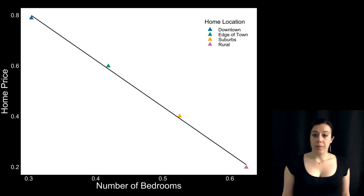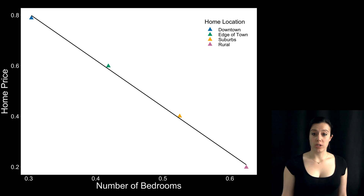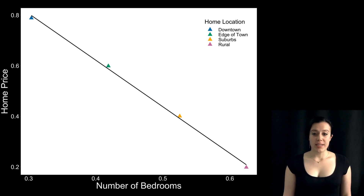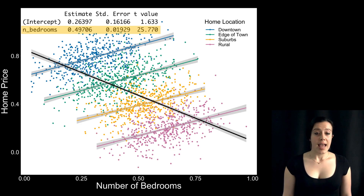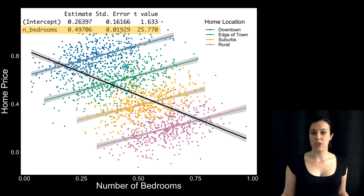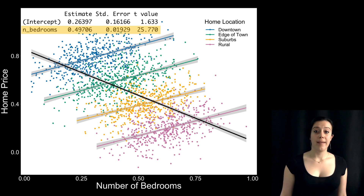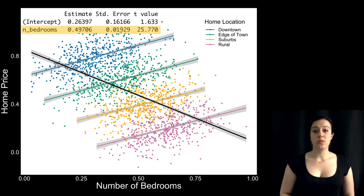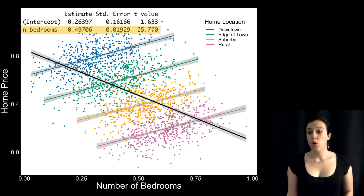So we see different effects when we look between versus within home type. This is where the beauty of multilevel modeling comes in. We can give multilevel models all of the data without aggregating by home type, but we can tell it about home type. When we build this multilevel model, the relationship between the number of bedrooms and home price is positive, just as we expected. This is Simpson's Paradox — the relationship between a predictor and an outcome might be different on the aggregate than it is when you look at some higher-level grouping cluster, in this case home location. And this is why mixed effects modeling is so important: when you ignore dependencies in your data, you can sometimes draw erroneous conclusions.